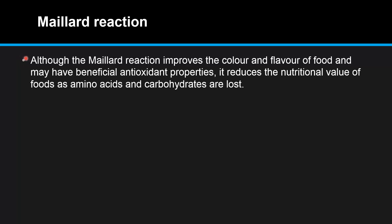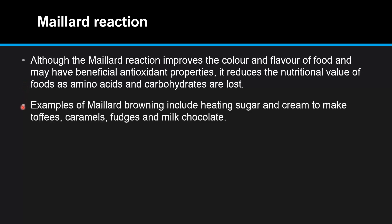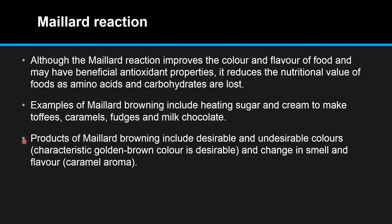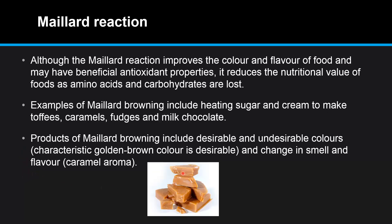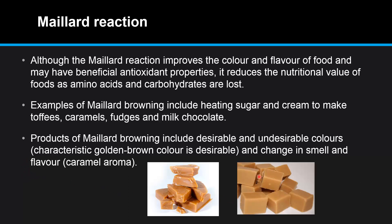Although the maillard reaction improves the color and flavor of food and may have beneficial antioxidant properties, it reduces the nutritional value of foods as amino acids and carbohydrates are lost. Examples of maillard browning include heating sugar and cream to make toffees, caramels, fudges, and milk chocolate. Products of maillard browning include desirable and undesirable colors — a characteristic golden brown color is desirable — and a change in smell and flavor, which is a caramel aroma. Here we have an example of toffee and fudge, both using maillard browning.